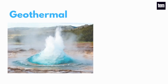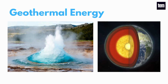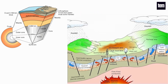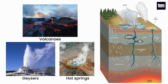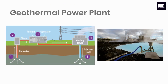Geothermal energy is heat from within the Earth. This heat is generated in the Earth's core by the slow decay of radioactive particles in rocks, about 6,378 km below the Earth's surface, and rises up through faults and cracks in the Earth's crust. Once it reaches the surface, the heat is released naturally in the form of volcanoes, hot springs, and geysers. This heat or hot water can be obtained by drilling into the Earth's surface, and is converted into steam which drives a steam turbine to generate electricity at a geothermal power plant.